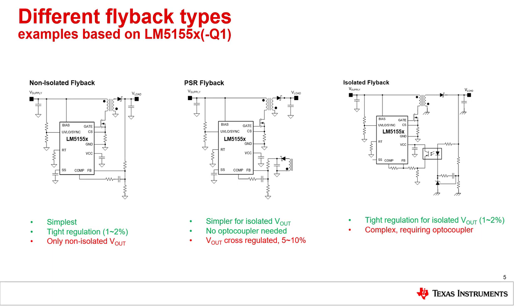The more complex isolated flyback solution uses an optocoupler to get the regulation signal from the secondary side to the controller on the primary side. This type of flyback converter will be used to go through the design procedure.